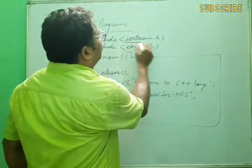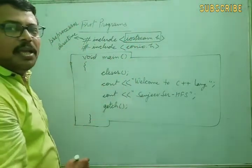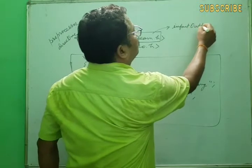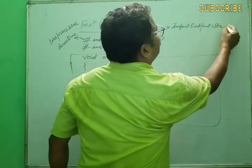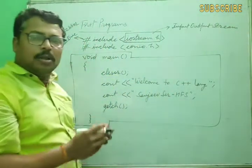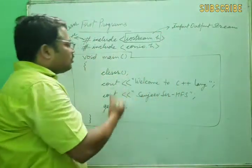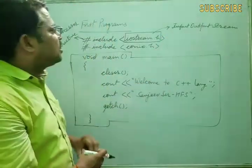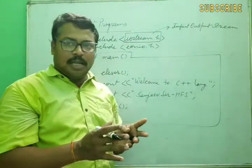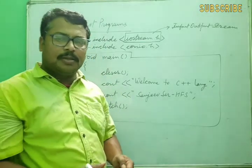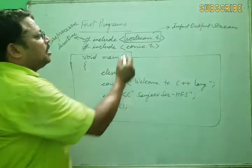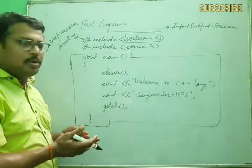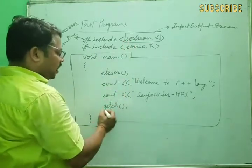Before processing, it directs the compiler about which header file is needed and which methods are required. Here is written iostream.h — that means input/output stream. All actions related to input/output operations or input/output methods are defined in C++. If you need to use them in your program, you must include this header file, because the header file contains a number of library methods and classes.